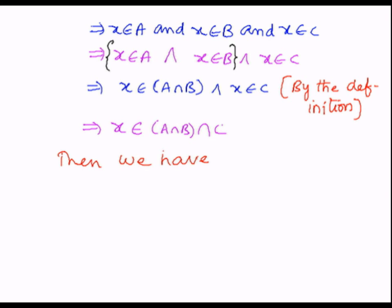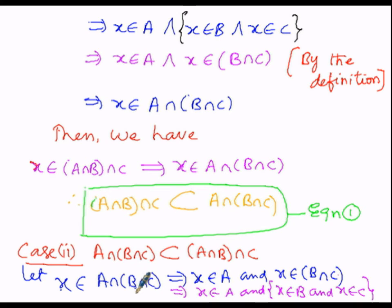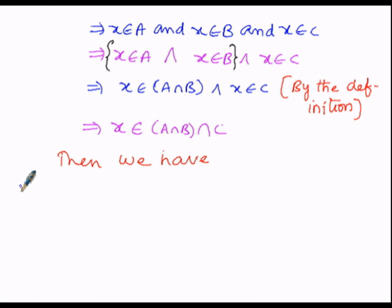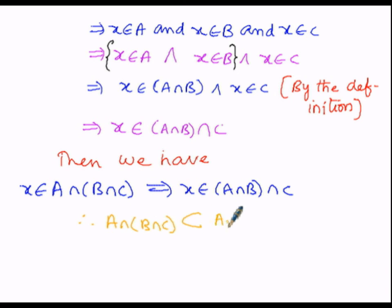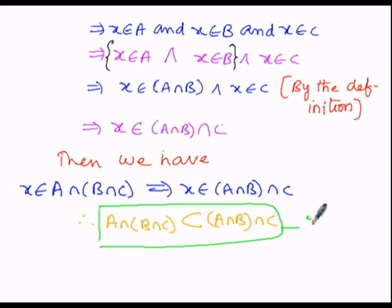So the LHS is x belongs to A intersection of B intersection C, which implies the RHS is x belongs to A intersection B intersection C. An element x belonging to A intersection of B intersection C is also present in A intersection B intersection C — the elements in the LHS are also elements of the RHS. Therefore the LHS is a subset of the RHS, so A intersection of B intersection C is a subset of A intersection B intersection C. We have proved the second case — let us label this as equation number 2.